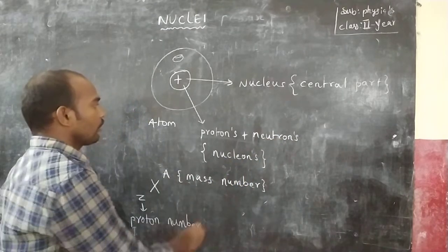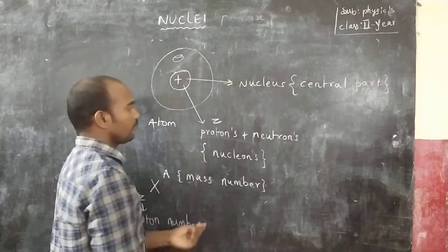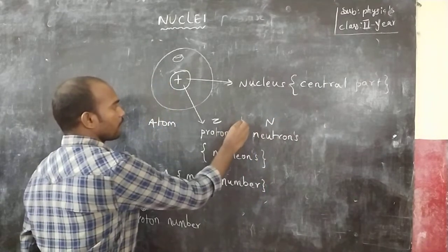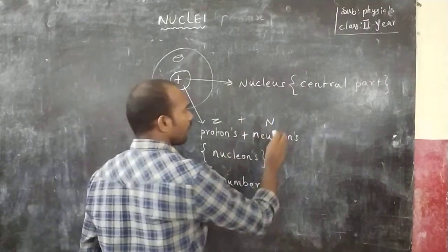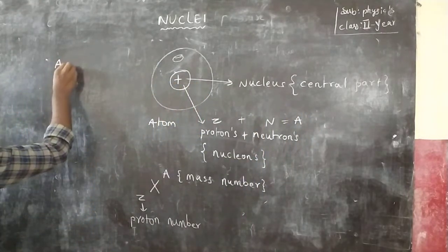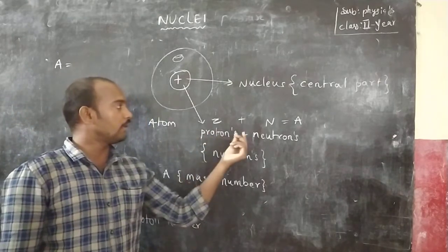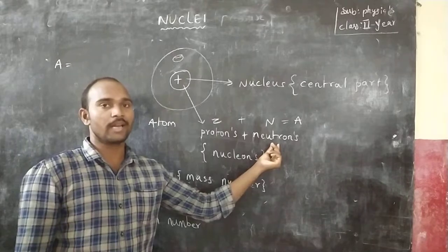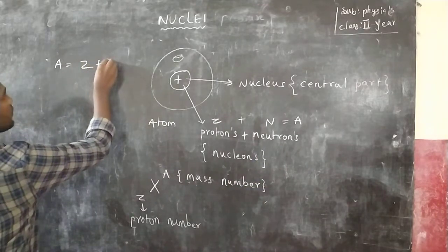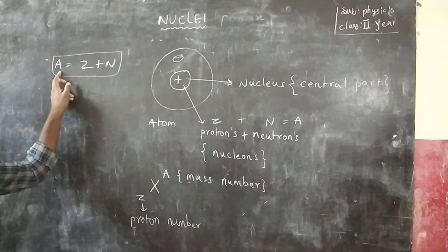The proton number is Z and the neutron number is N. Z plus N is collectively called the mass number A. So A is the mass number.